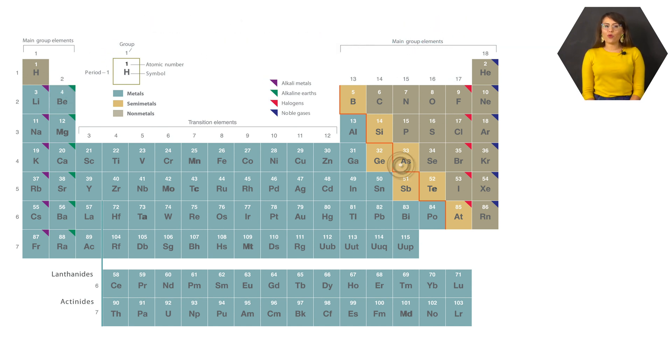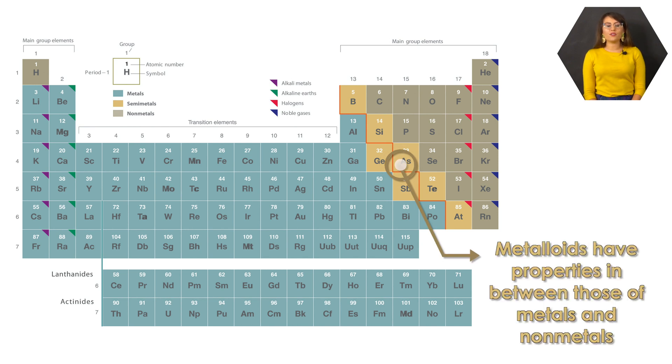If we keep moving right, we hit the metalloids, or also known as semi-metals, which form a staircase shape. Metalloids are commonly used as semiconductors because they have properties in between those of metals and non-metals.